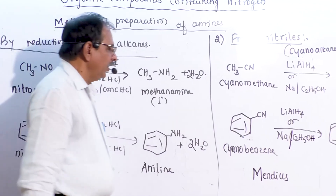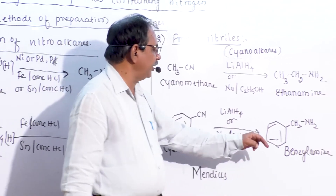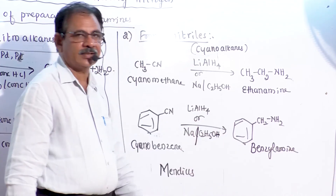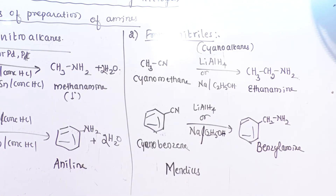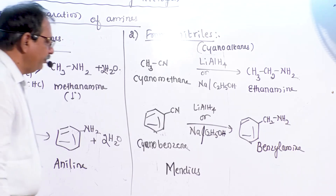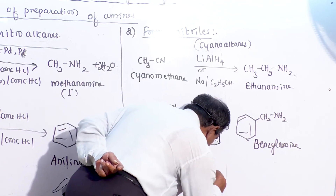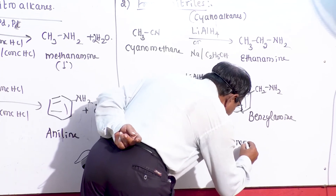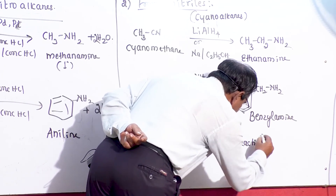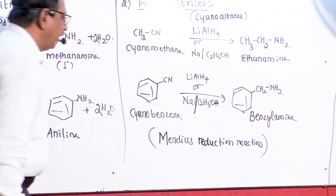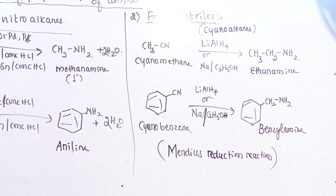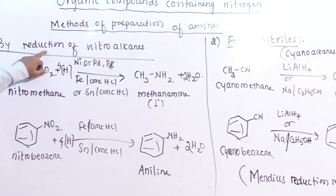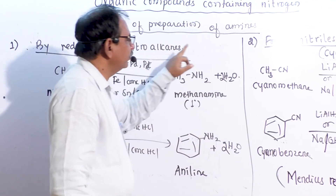Mendius reduction reaction: nitriles are reduced to primary amines using sodium in ethyl alcohol (Mendius reducing agent). This is the second method for the preparation of amines. The first method is reduction of nitro compounds; the second is reduction of nitriles.